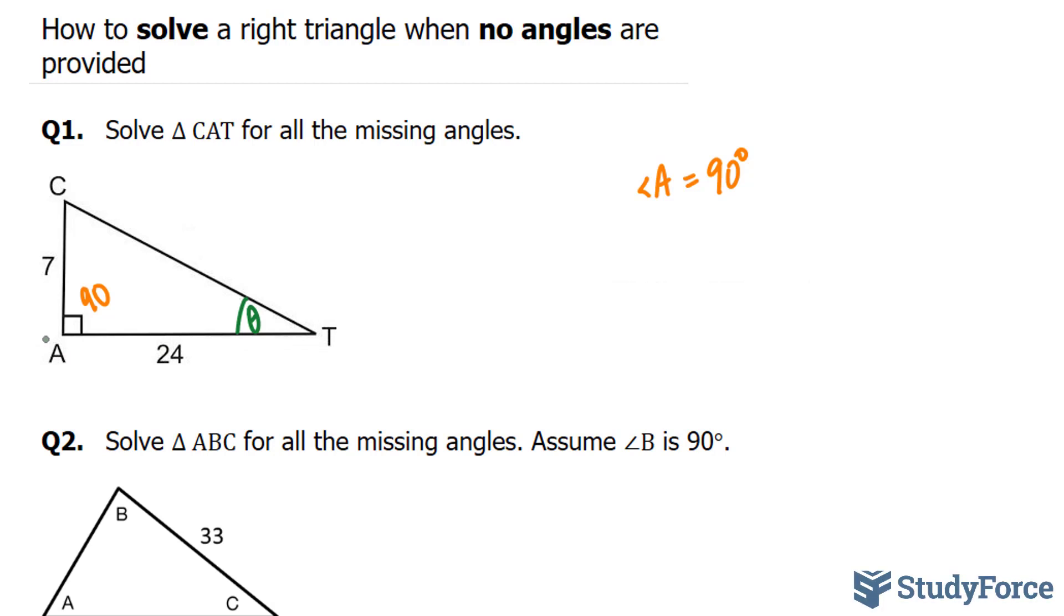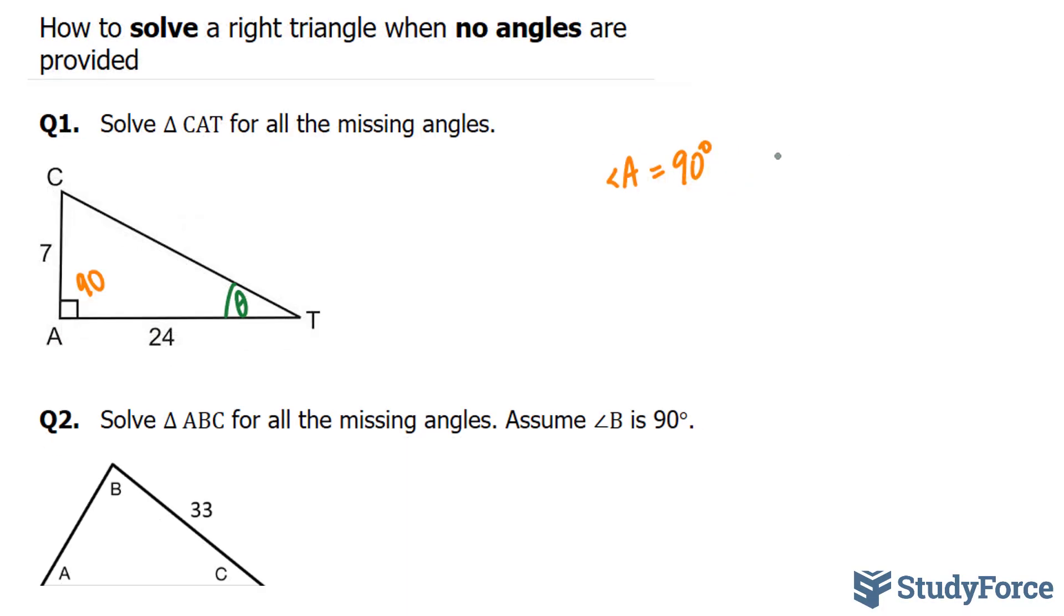We have three trigonometric ratios that we could possibly work with. They are sine, cosine, and tangent. Now, sine, cosine, and tangent have different ratios. The sine ratio is SOH, representing opposite over hypotenuse. Cosine is CAH, which represents adjacent over hypotenuse. And tangent is TOA, which represents opposite over adjacent.